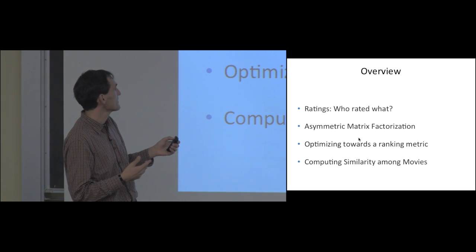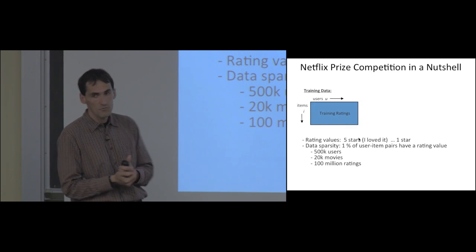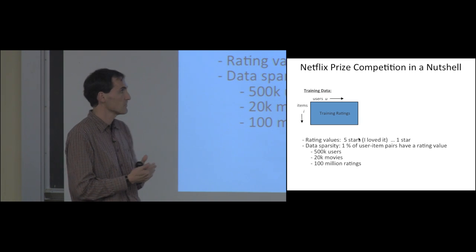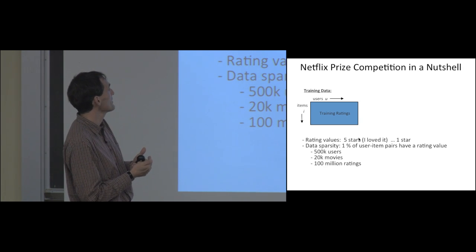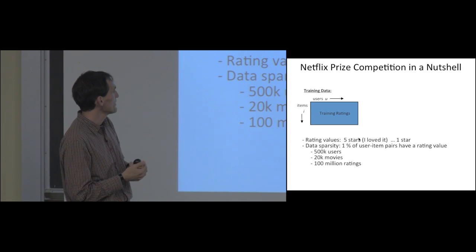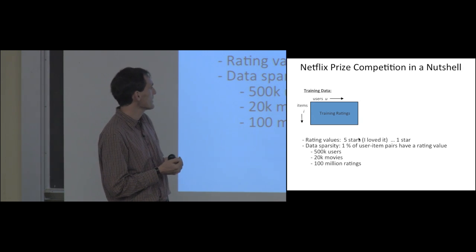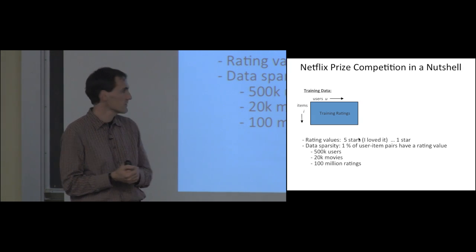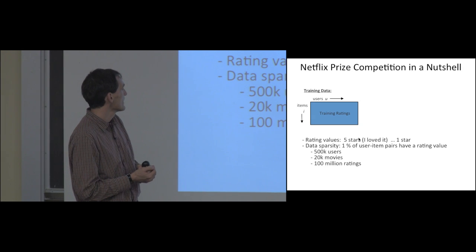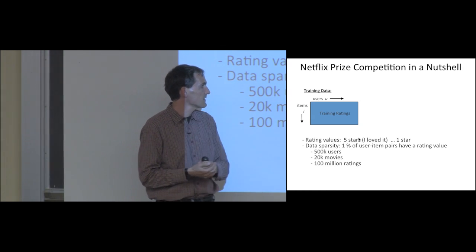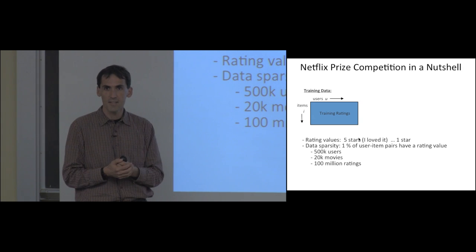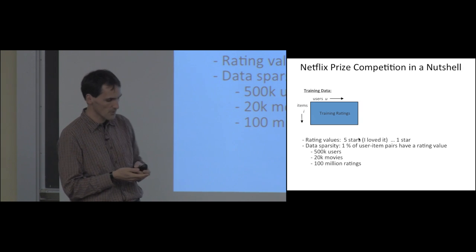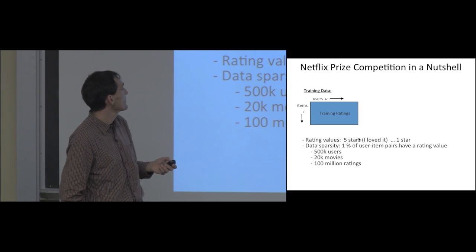Let's get started with the first part by quickly reviewing the Netflix Prize competition, which ended about six years ago. There were 500,000 users who rated 20,000 movies, with rating values between one and five stars. This matrix was pretty sparse — about 1% of the entries were observed.